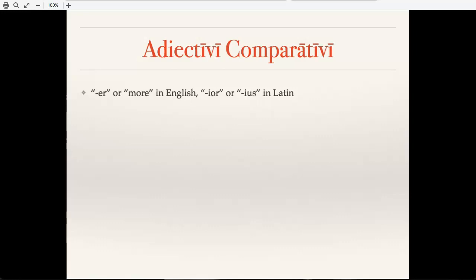In English, there are two ways that we do this, either by sticking -er onto the adjective, or sometimes we use the word 'more' separately. In Latin, there are two endings we use for this: -ior, and for neuter nouns, -ius.